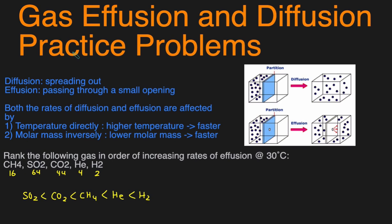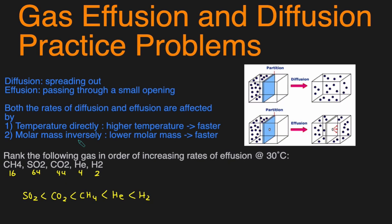So there you have it. We just covered four examples of gas effusion and diffusion problems. Just to summarize the main points, here you have the definition of diffusion and effusion. The main thing you need to know is that both of these rates are affected by temperature. If the temperature is higher, it's going to be faster. If it's lower, it's going to be slower. And the rates are inversely related to the molar masses. Heavier molecules move slower and lighter molecules move faster. And if you have to compare the rate of two gases, then just use Graham's Law.